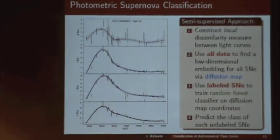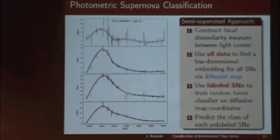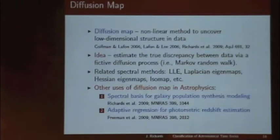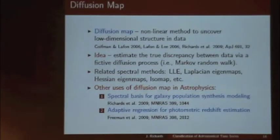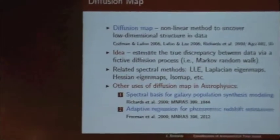In the challenge data there are something like 20 times more unlabeled than labeled supernovae. Our idea is to use all the data to find an appropriate low-dimensional representation of these time series, and to use the labeled information to train a random forest classifier. The tool we use for this is called Diffusion Map — it's a method for manifold learning, for non-linear dimensionality reduction. The idea is to estimate the true discrepancy between individual data points based on a fictive random walk on our data.